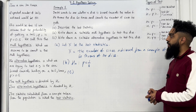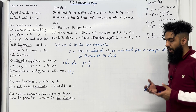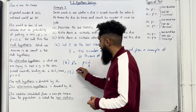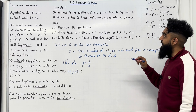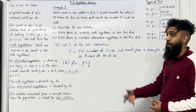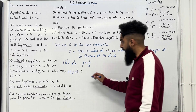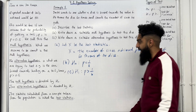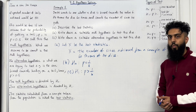Let's have a look at Part C: write down a suitable alternative hypothesis to test the dice. The alternative hypothesis is denoted by H₁. We are testing if the dice is biased towards the value 6 — in other words, biased towards landing on a 6. So H₁: P greater than 1/6. The probability of getting a 6 is greater than 1/6. That completes Example 1.